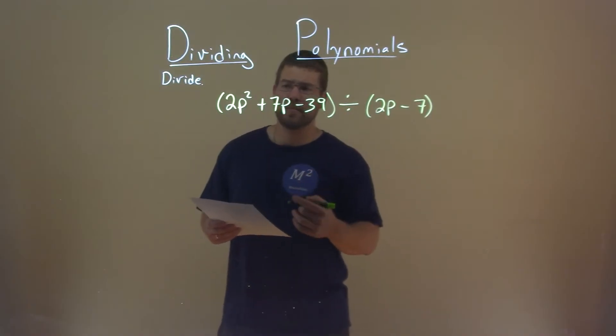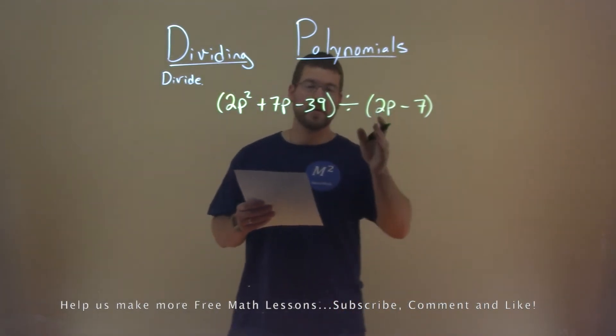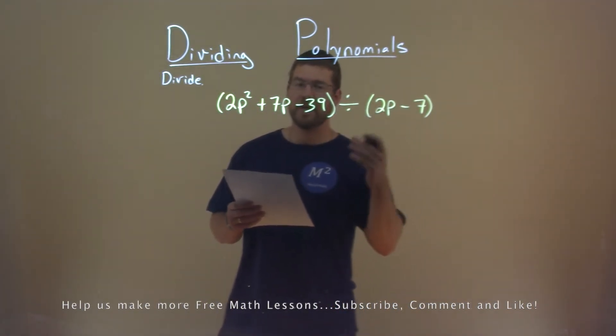We're given this problem right here. 2p squared plus 7p minus 39 divided by 2p minus 7. We need to divide this.